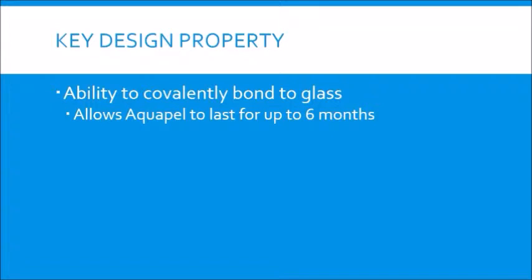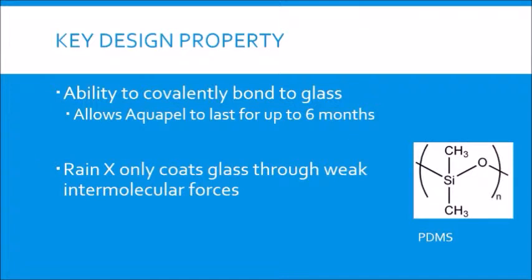This creates a strong bond that allows Aquapel to withstand much greater stresses from sources such as wipers and rain, hence allowing it to last for as long as six months. Rain-X, on the other hand, merely coats the surface of the glass through weak intermolecular forces because its constituent chemical, PDMS, cannot covalently bond to the glass. As a result, Rain-X comes off easily compared to Aquapel, especially when wipers are used.